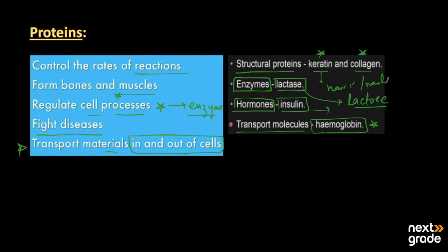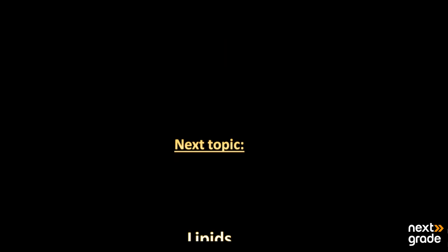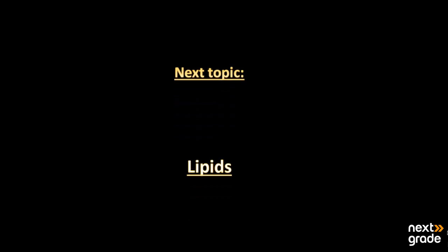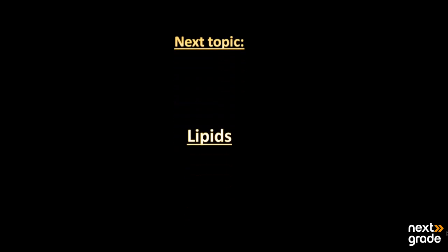So this was a simple overview of the sources and uses of proteins, and how they are helpful for our body and for different purposes. I hope you all understand — if you have any queries, ask me in the comment section and I will get back to you soon. Keep learning and have a good day. The next topic we will discuss is the third macromolecule, which is known as lipids, also known as fats.